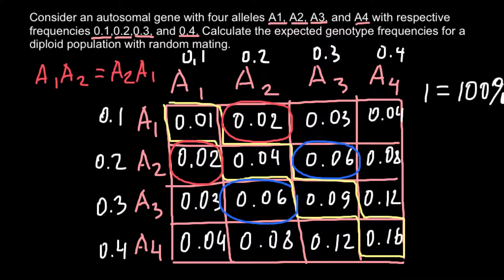Or if we multiply all the numbers by 100, when we combine all these numbers, we're going to get 100%.